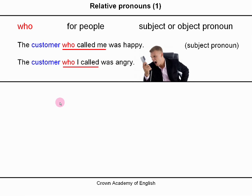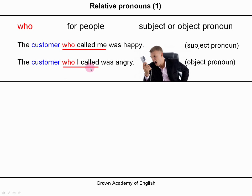'The customer who I called was angry.' Again, this is the relative pronoun 'who', but this time it is the object pronoun, because I called the customer — so it is the object.